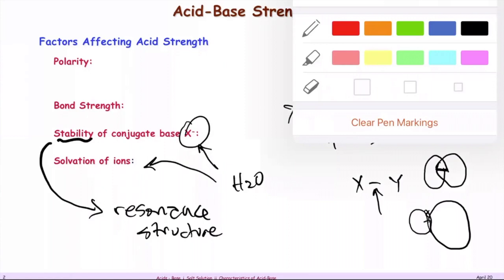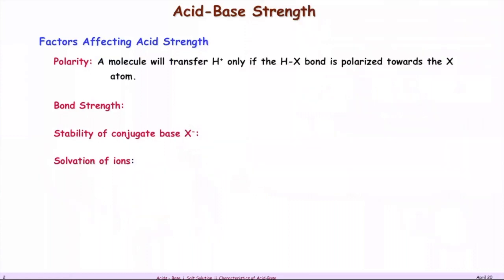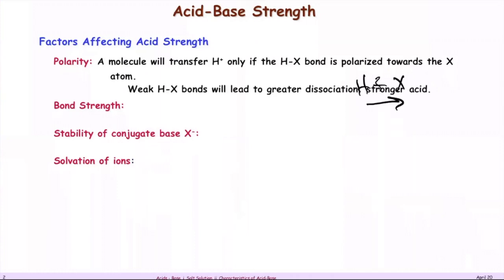A molecule will transfer hydrogen only if its H-X bond is polarized toward the X — the electronegativity draws electrons toward X, weakening that bond. Weak H-X bonds lead to greater dissociation, meaning the hydrogen is released more efficiently.